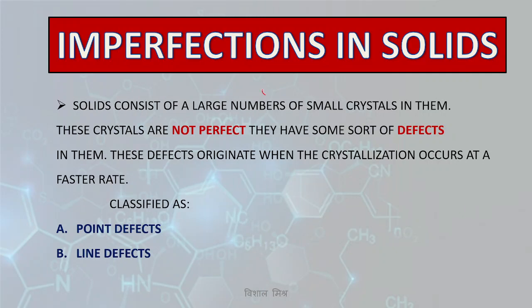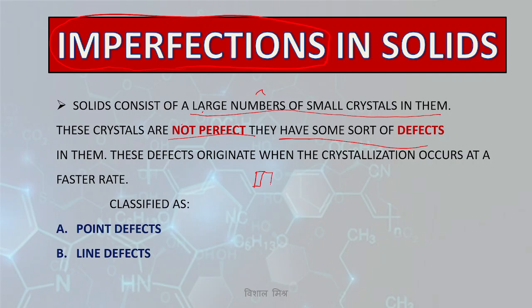The word 'imperfection' signifies that the solids we see contain a large number of small crystals, and these crystals are not perfect — they have some sort of defects. In crystalline solids, all constituent particles are well arranged in a definite pattern, but when crystallization occurs at a faster rate, some defects originate. This defect is known as imperfection in solids.